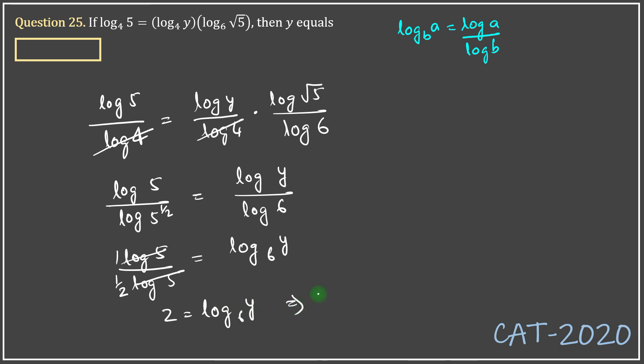Or in other words, y equals 6 square, which is 36. So the correct answer to this question should have been 36. That's it, a very simple application of laws of logarithms.